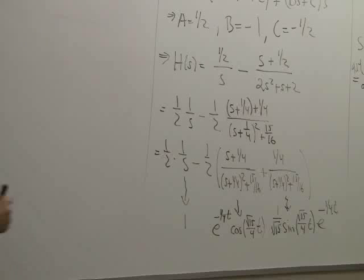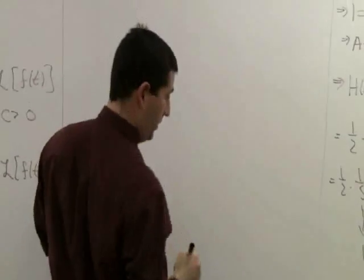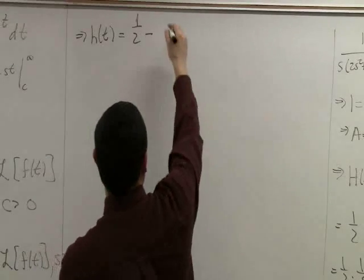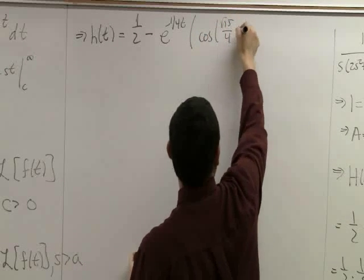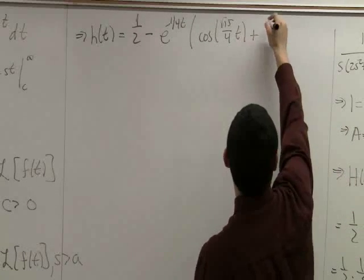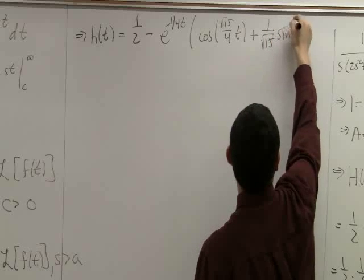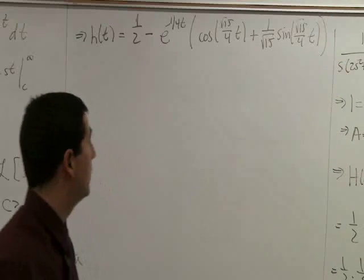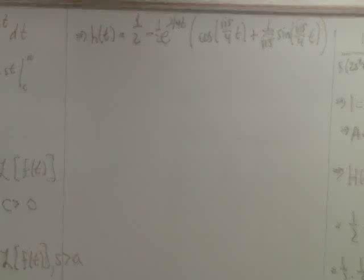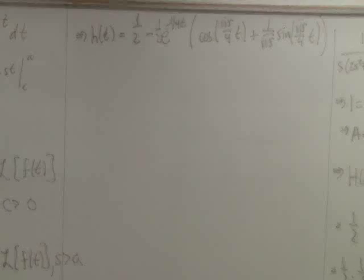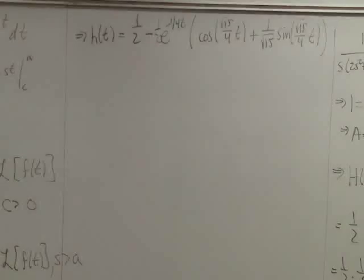Putting it all together, H of T equals one half minus E to the minus one quarter T times cosine of (root 15 over 4) T plus one over root 15 times sine of (root 15 over 4) T. To get Y, you replace all the T's with T minus 5 and T minus 20 as the case may be.